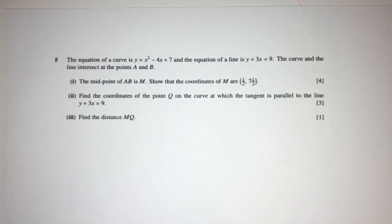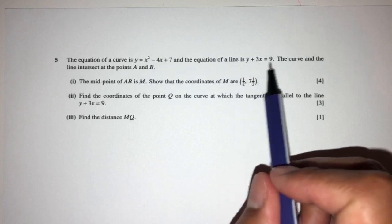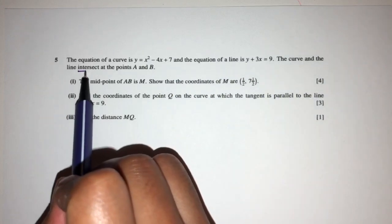Now for this question, the equation of a curve is given to you by y = x² - 4x + 7, and the equation of a line is given to you by y + 3x = 9. The curve and the line intersect at points A and B.